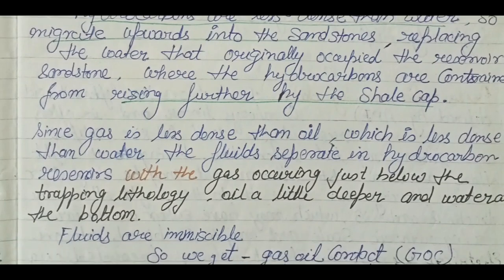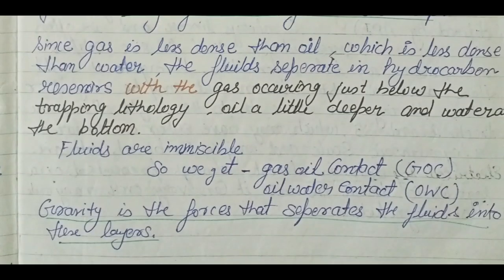Gas is less dense than oil. So fluids separate in the hydrocarbon reservoir — gas occurs just below the trapping lithology, oil a little deeper, and water at the bottom. These fluids are immiscible — they don't mix. We get a gas-oil contact and an oil-water contact. The force behind this separation is gravity.